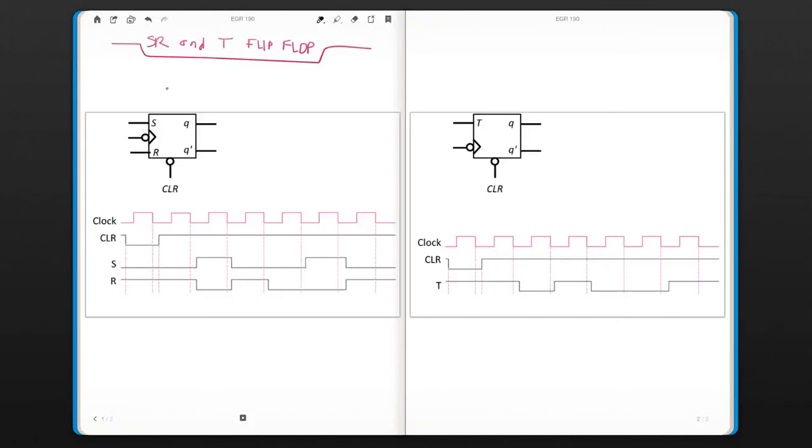We will now talk about the SR and T flip-flop. So the SR flip-flop is exactly the same kind of operation as the SR latch. So we have our S and R inputs. If they are 0, 0, this is your memory state where your previous value is kept in the output.